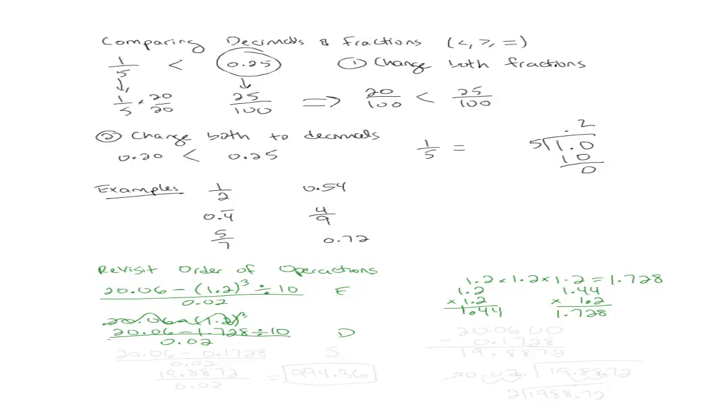What happens when we divide by 10? To the left or the right? To the left. How many times? 1. Good. So this is going to become 20.06 minus 0.1728 over 0.02. Now what? Yes. Subtraction. So I can do that here on the side.